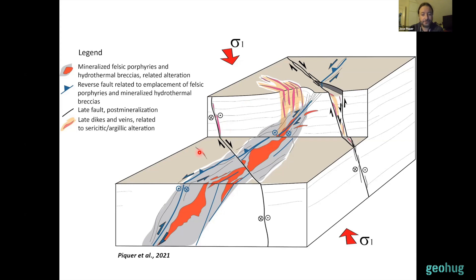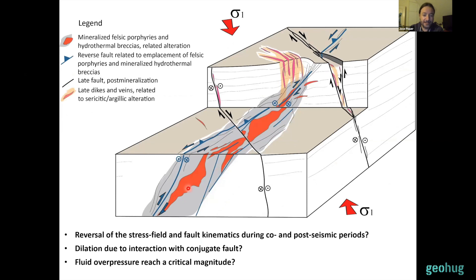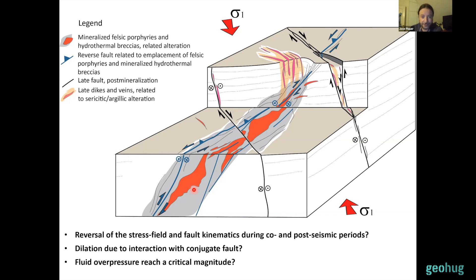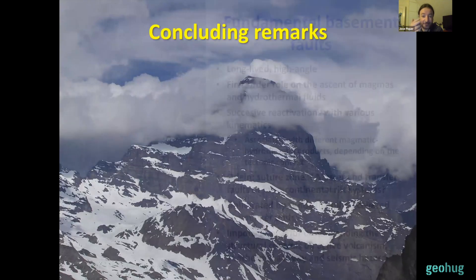The question remains open about what allows for the sudden release of all this material accumulating at depth along misoriented faults. It could be related to the reversal of the stress field and fault kinematics during co- and post-seismic periods — first proposed for porphyries in central Chile by Podossi and Cornejo in 2012. It could also be related to dilation along these misoriented faults due to their interaction with more favorably oriented conduit faults. Or, as shown by Richard Sibson's fault valve model, the fluid pressure simply reaches a critical magnitude, allowing for fault reactivation and the escape of all the magmas and fluids that were accumulating at depth.